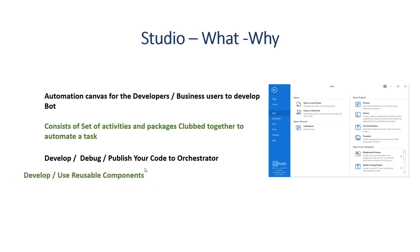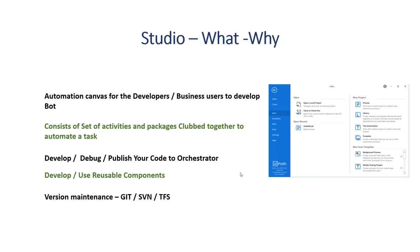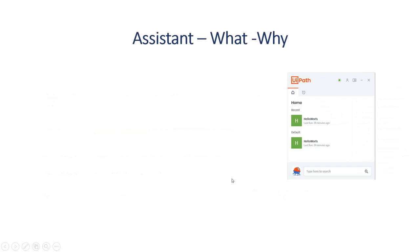You can also use UiPath Studio to develop and use reusable components — code that can be used again and again across the team. Additionally, UiPath Studio supports version maintenance; you can connect it to Git, SVN, and TFS so that your code is always safe in repositories. A link for more details will be provided in the description.